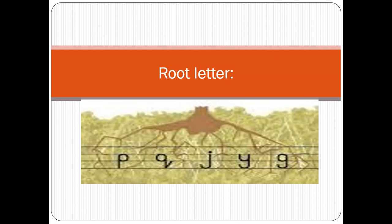Sky letters are those letters that will be written on the top three lines. Grass letters are those letters that will be written between the two middle lines. Root letters are those letters that will be written on the bottom three lines. Make sure, students, that you learn it again and again, and do practice the sky letters, grass letters, and root letters on your rough copy.